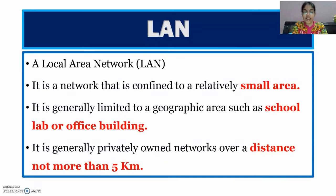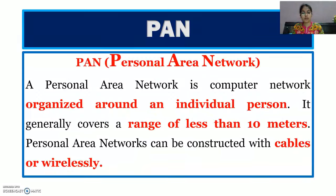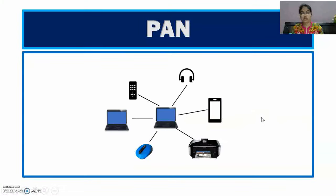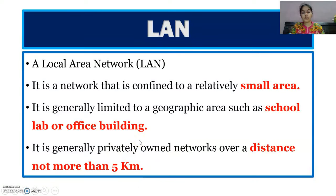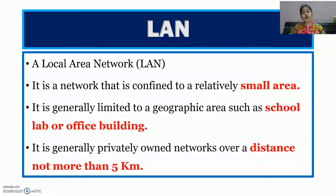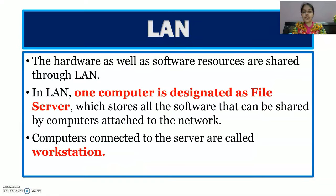The next type of network is LAN — Local Area Network. It is a network that is confined to a relatively small area such as your computer labs, office buildings, or school buildings. LAN is generally limited to a geographic area such as a school lab or office building. It is generally a privately owned network over a distance not more than 5 km. Hardware as well as software resources are shared through LAN.